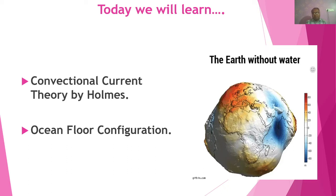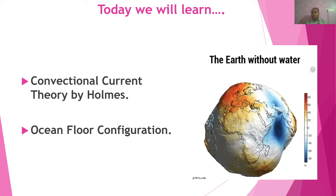Today we will understand the concept of convectional current theory by Holmes and ocean floor configuration — these two points will be our main focus. On your right-hand side, you can see an image. This is a true image of our planet Earth — if you squeeze out all the oceanic water, our planet Earth will look like this.